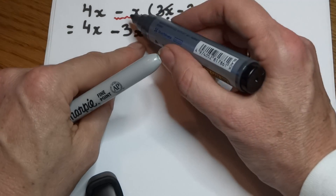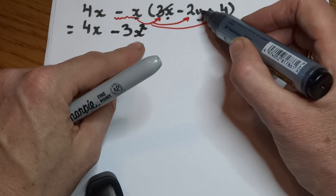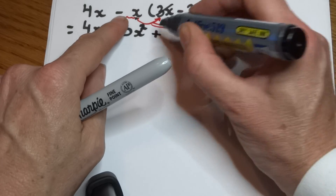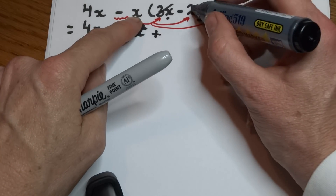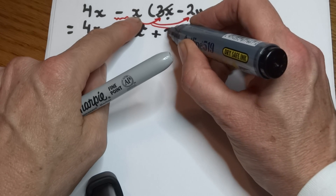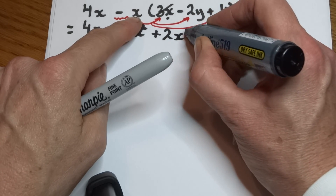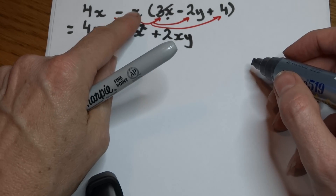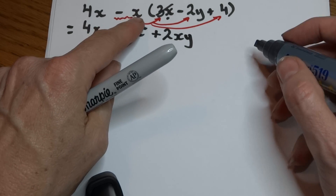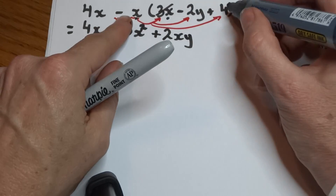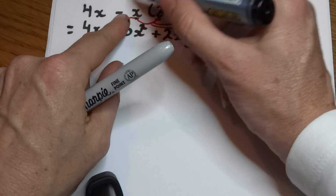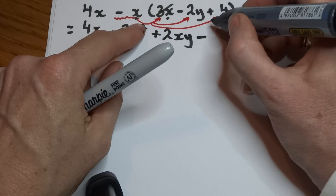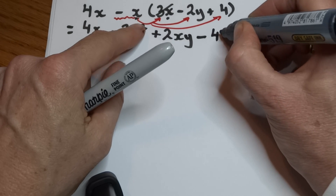Now we're going to multiply the minus x by minus 2y. Minus times a minus is going to give us a plus, and x times 2y is going to give us 2 lots of xy. And then our final expression will be minus x times plus 4. Minus times a plus is going to give us a minus, so 4 times x gives us minus 4x.